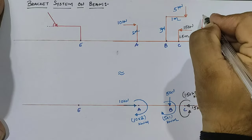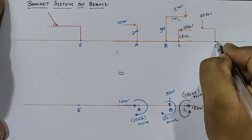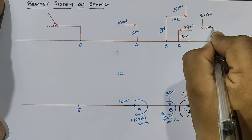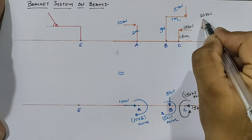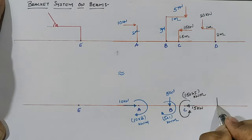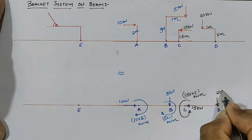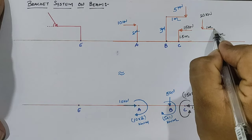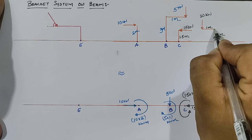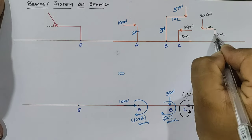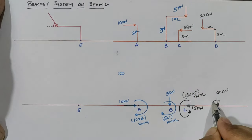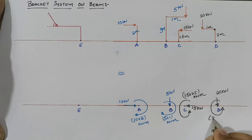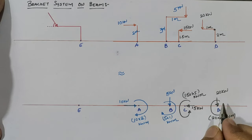At point D, a vertical load of 20 kN acts on a bracket system with a beam of 1 meter and a column height of 2 meters. The 20 kN load acts directly at point D, and it creates an anti-clockwise moment of 20 × 1 at the column head, which transfers directly to point D as 20 kN in the anti-clockwise direction.